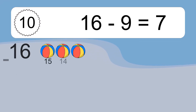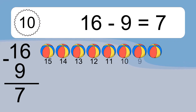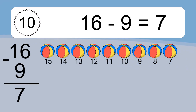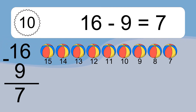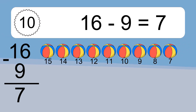16 minus 9 equals what? 16 minus 9 equals 7. Let's count it: 15, 14, 13, 12, 11, 10, 9, 8, 7.